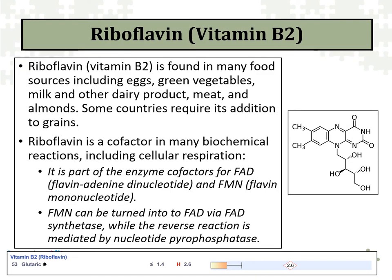Riboflavin is found in many different types of foods: eggs, green vegetables, dairy products, meat, milk, and almonds, for example. It is a cofactor in many different biochemical reactions. For example, it's part of the enzyme cofactors for what's called flavin adenine dinucleotide (FAD) and flavin mononucleotide (FMN), and this plays a critical role in mitochondrial activity.